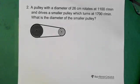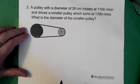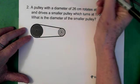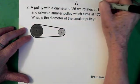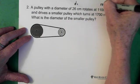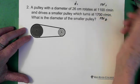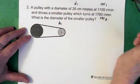Now we have a second question. A pulley with a diameter of 26 centimeters rotates at 1100 revolutions per minute and drives a smaller pulley which turns at 1700 revolutions per minute. So then this is diameter 1. This is our revs 1. Here we have our revs 2. And we're looking for diameter 2. That's the question.